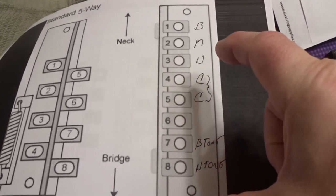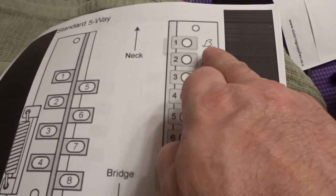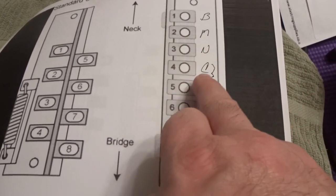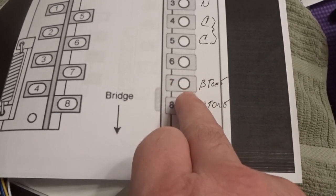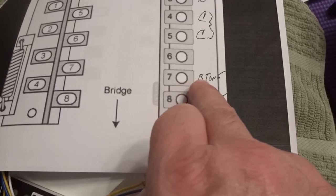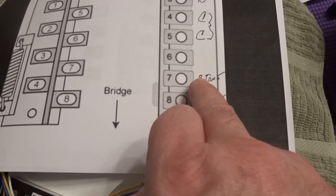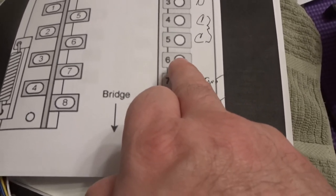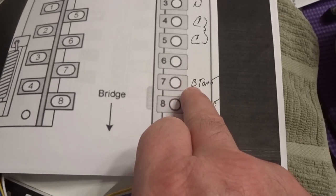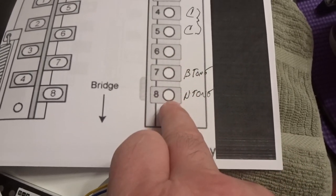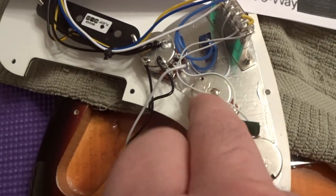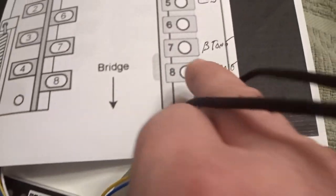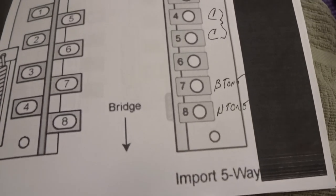So before I take that out, I wanted to briefly go over, if you have this switch it's a good idea to mark like one bridge, two middle, three neck, and then four and five are your common. Six was not used, and then seven that's your middle tone, but when you jump six to seven that becomes middle and bridge tone. And then eight just goes right to your second tone pot that controls the neck. So you want to always take a picture of it and then write it down.